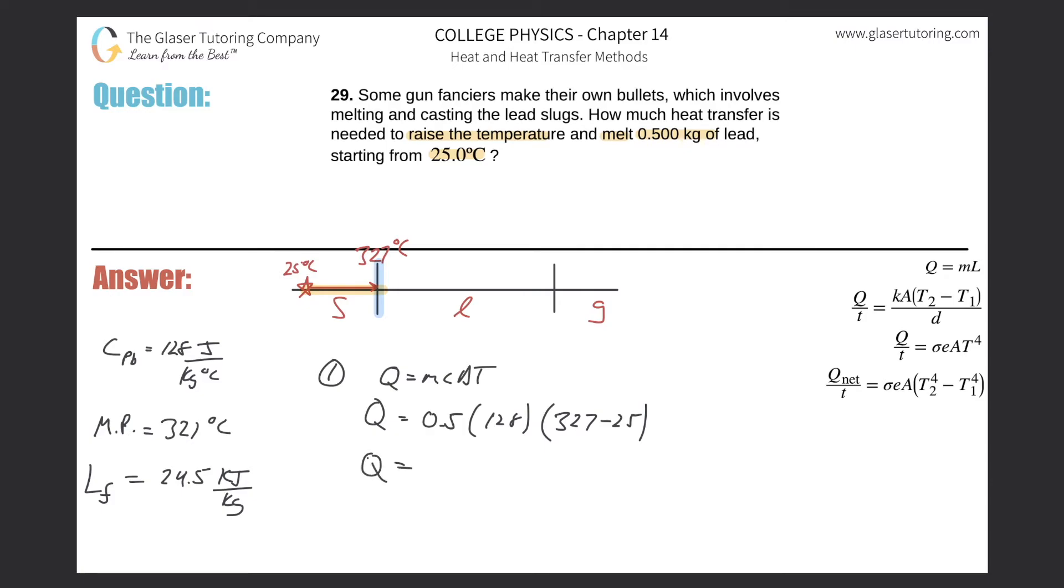And what do we get? Running through this problem because it should be pretty easy: 0.5 times 128 times parentheses 327 minus 25. And here we get about 19,328 joules.